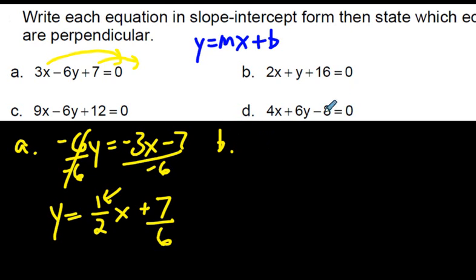And the minus 7 over, sorry, it's a negative 7 and a negative 6, so it's positive 7 over 6. And I'm going to leave it like that. Because in this question, all we're really looking for is which equations are perpendicular. So I'm really most concerned with what is the slope of each one. So let's do b really quickly. I'm going to get y all by itself. And I'm going to do this very fast. y equals negative 2x minus 16. So that's b.